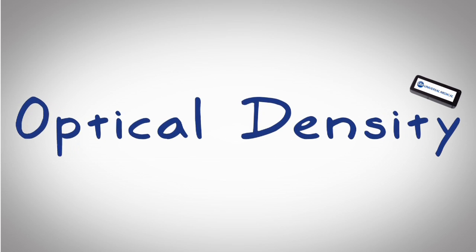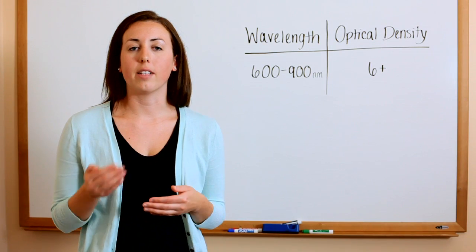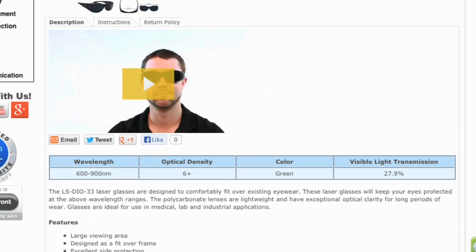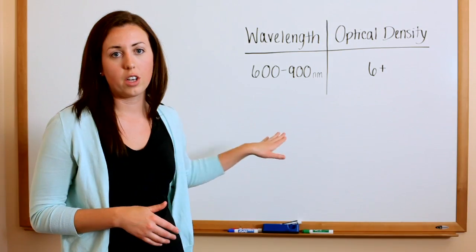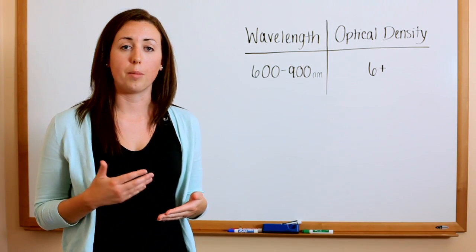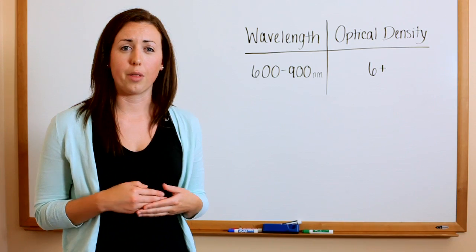The optical density is basically the laser light that is allowed to pass through a filter. For example, our diode laser safety glasses have an optical density of 6 which is associated with the wavelength range. An optical density of 6 is actually 0.0001 percent of the laser light that can go through the filter.